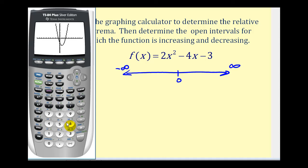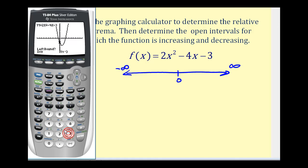By analyzing the graph we can see that it decreases on this interval, then we have a low point and the function starts to increase. So because we have a low point here, we have a relative minimum. Let's go ahead and find that first. We're going to press second trace and select the minimum option. It's asking us to be to the left side of the relative minimum, so let's go ahead and get a little bit closer.